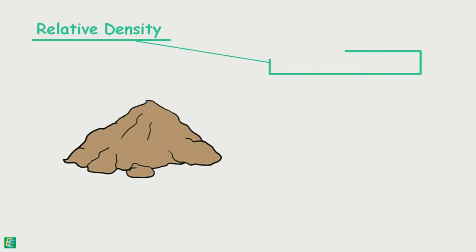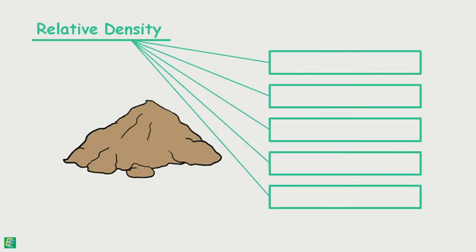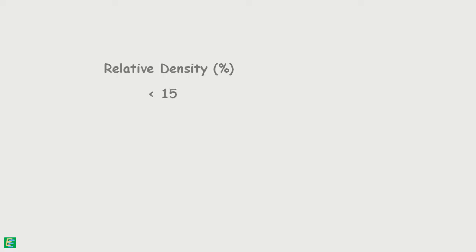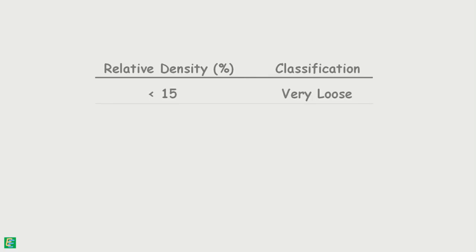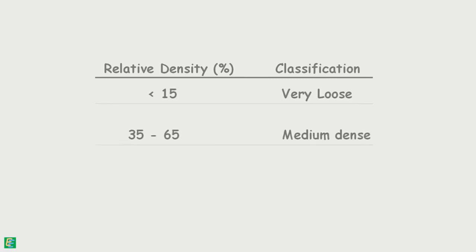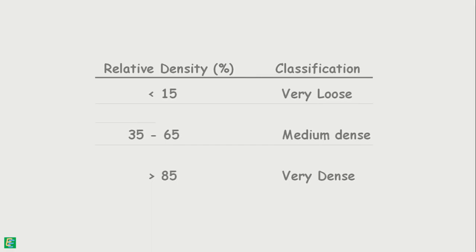On the basis of relative density, coarse-grained soils can be divided into 5 categories. If the value of relative density is less than 15, soil is identified as very loose. If the value is between 35 and 65, soil is medium dense. If it has a value higher than 85, soil is classified as very dense. Similarly, other value ranges are classified as loose and dense.